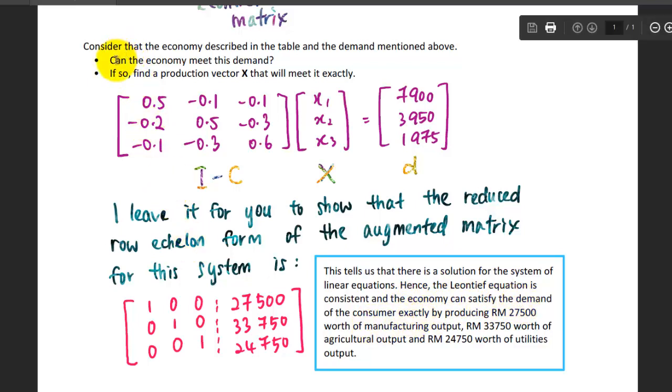We say that the economy can satisfy the demand of the consumer. This answers the first question: can the economy meet this demand? Because we have one solution for it, so we say the economy can meet the demand. If we don't have a solution here, which means you have zero, zero, zero but a non-zero value here, that's no solution. If no solution, it means the economy could not meet the demand. But in this case, we have a solution.